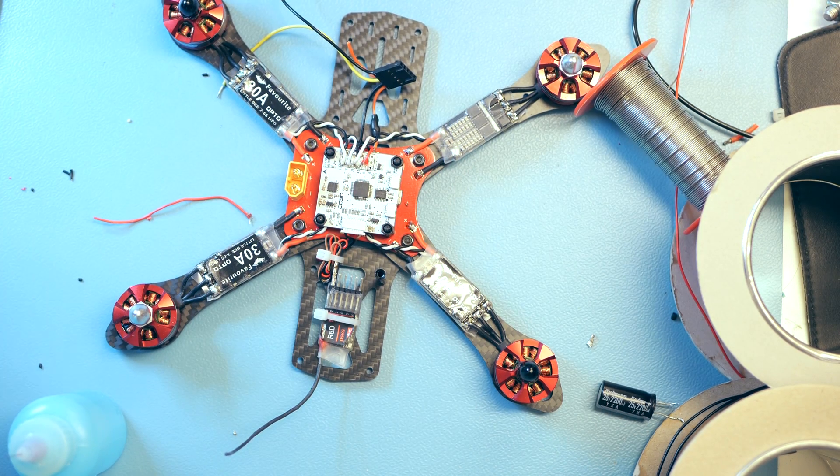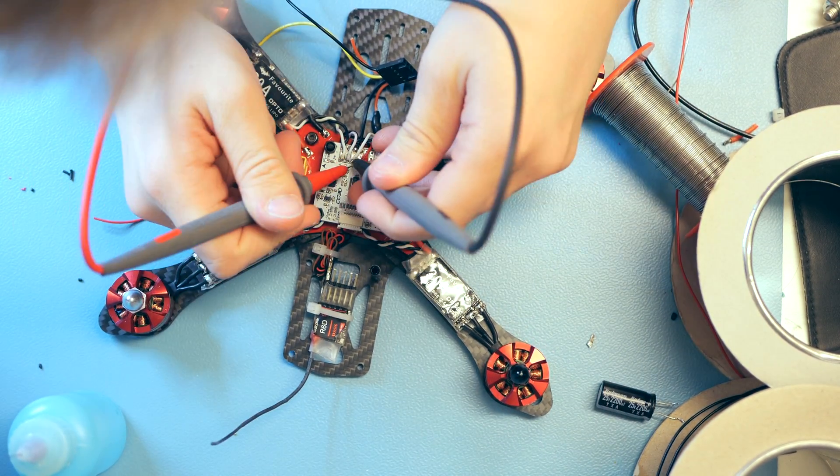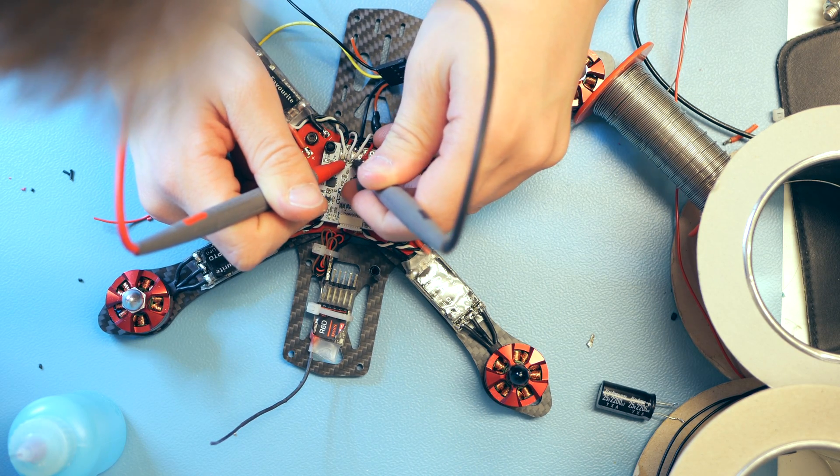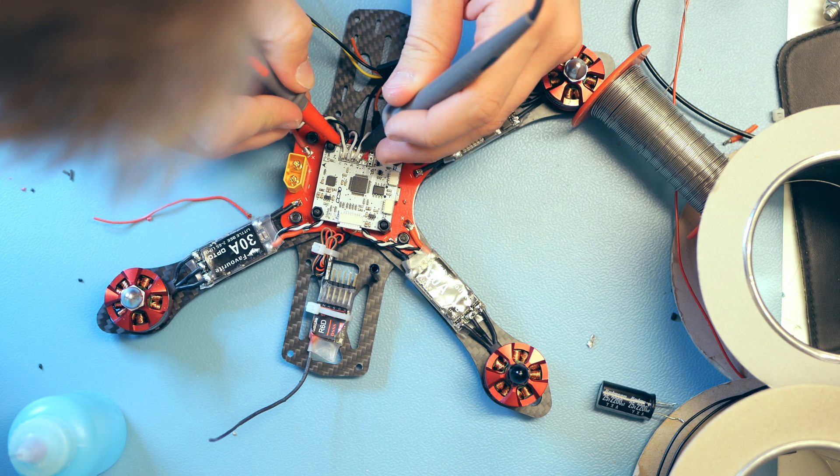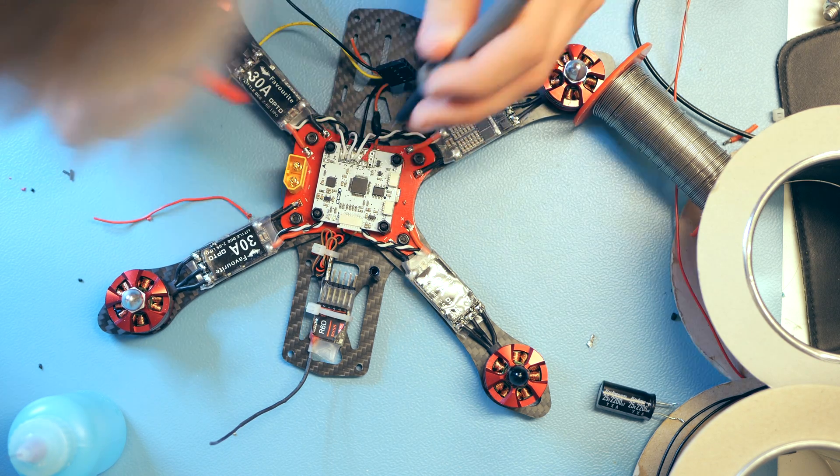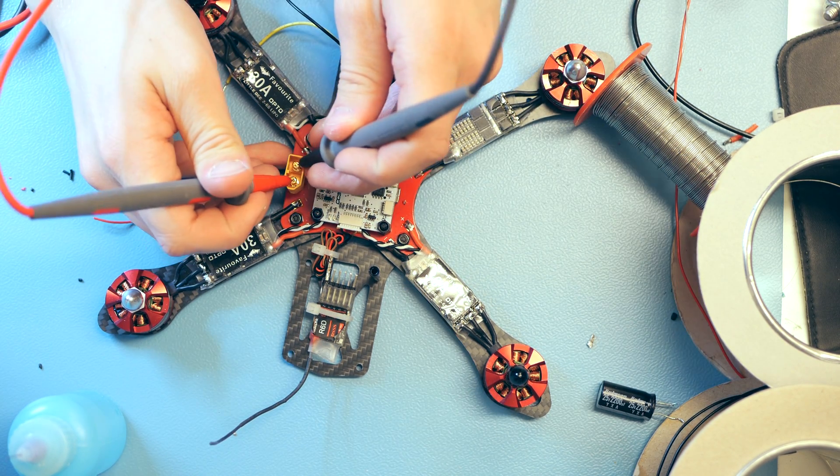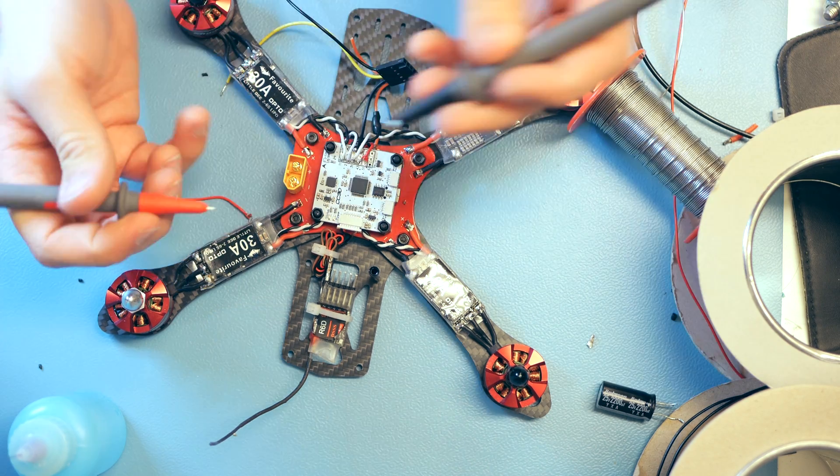Once you're done, it should look something like this. Now I'll just take my multimeter and make sure that none of the signal pins are connected, and that all of the plus are connected, and all of the negatives are connected together. I'll also check at the XT60 connector on the board.